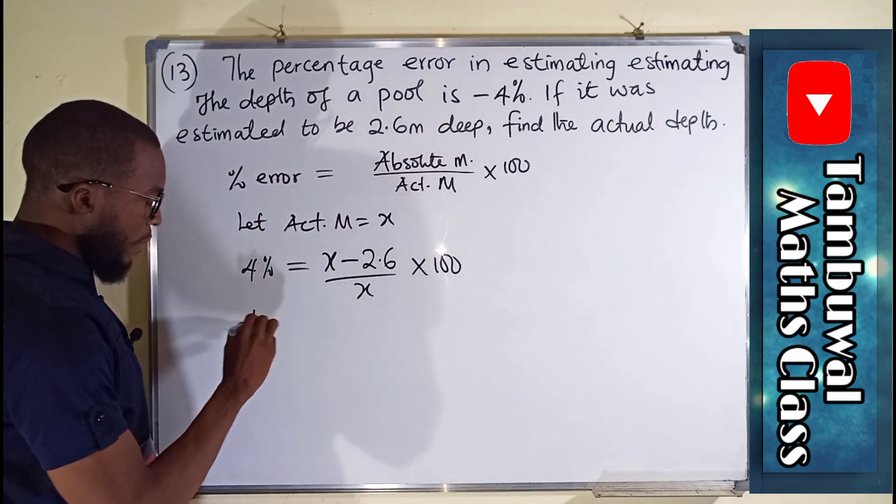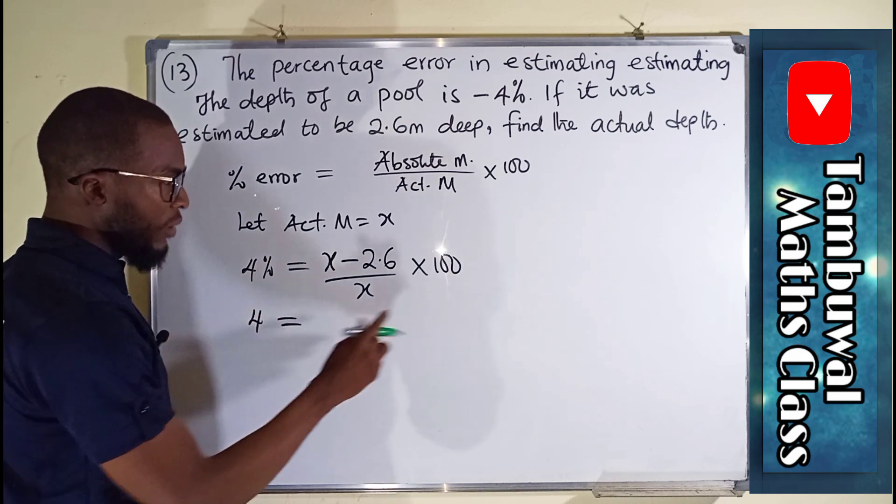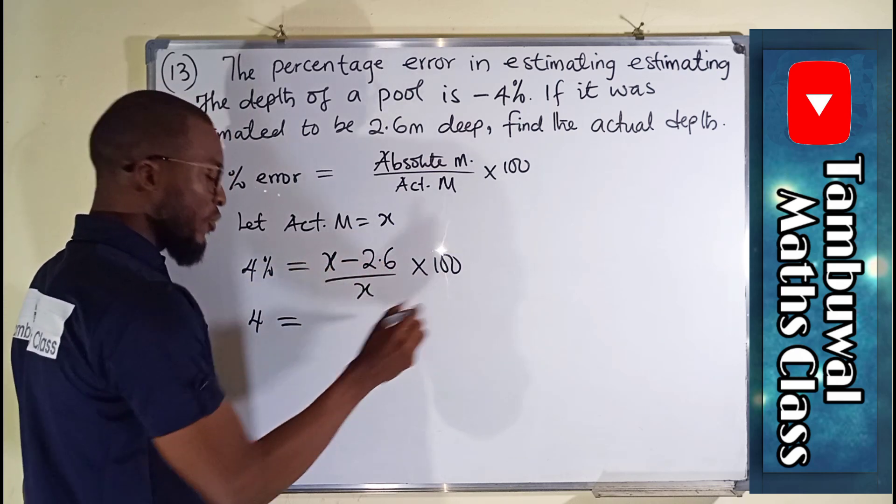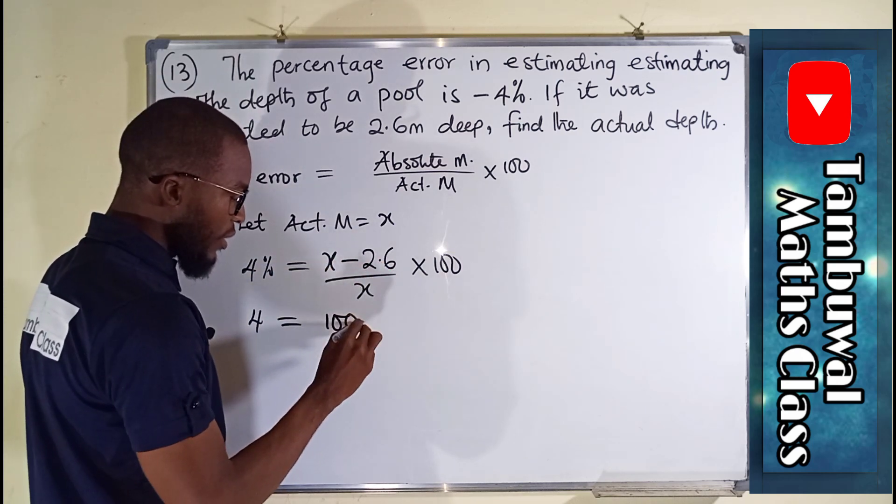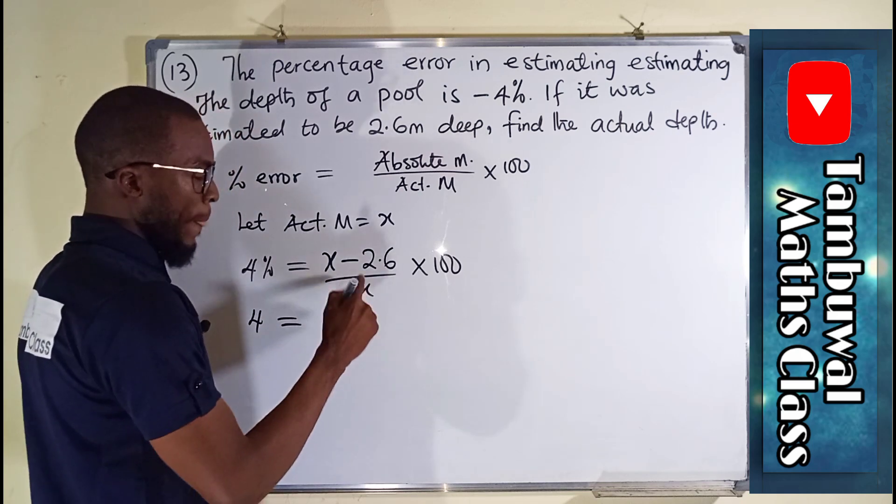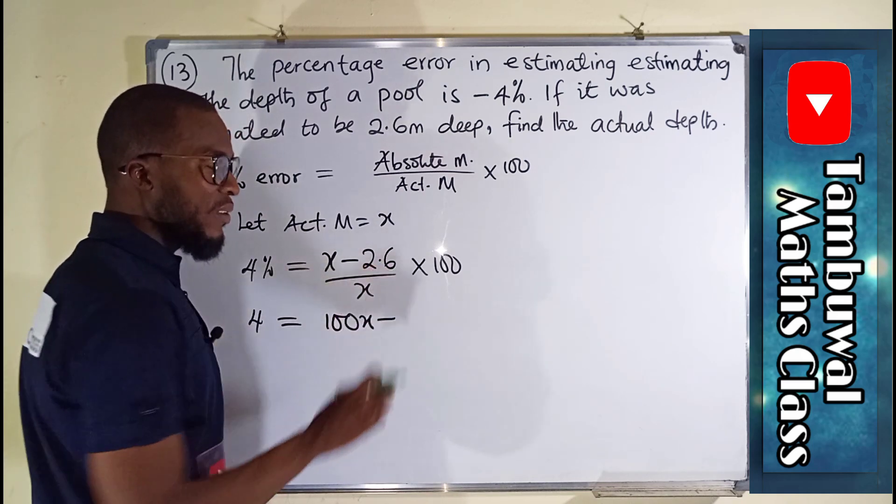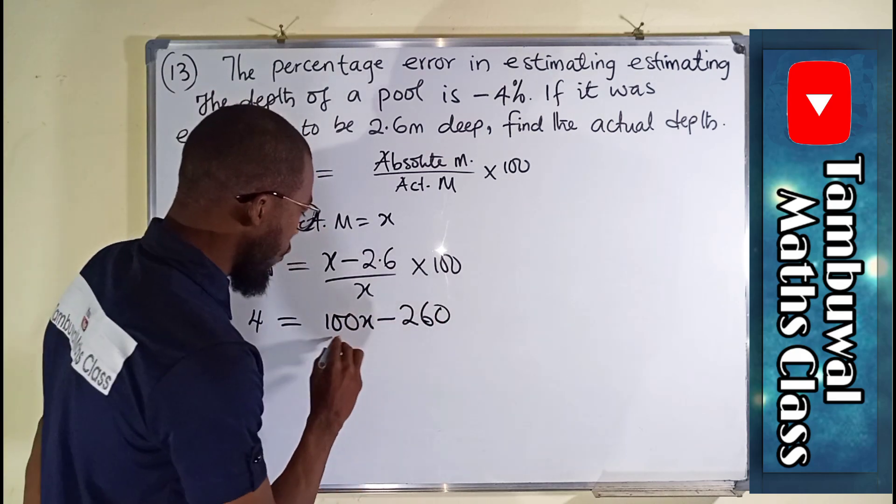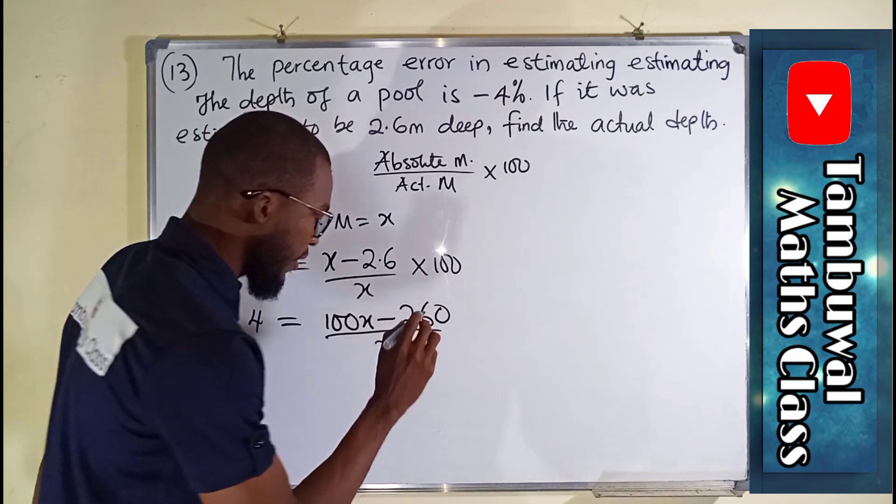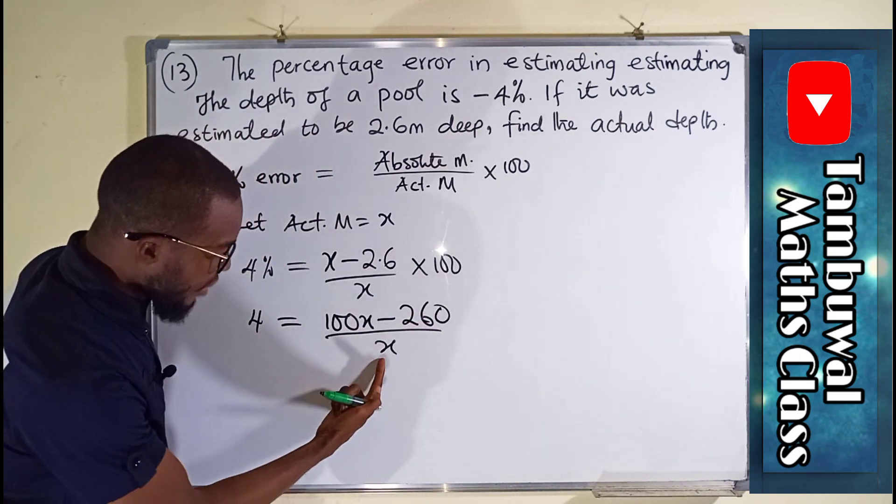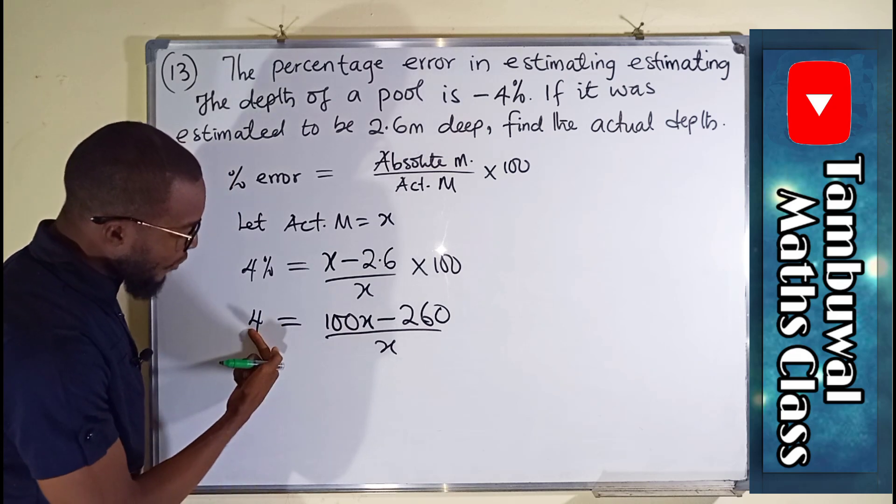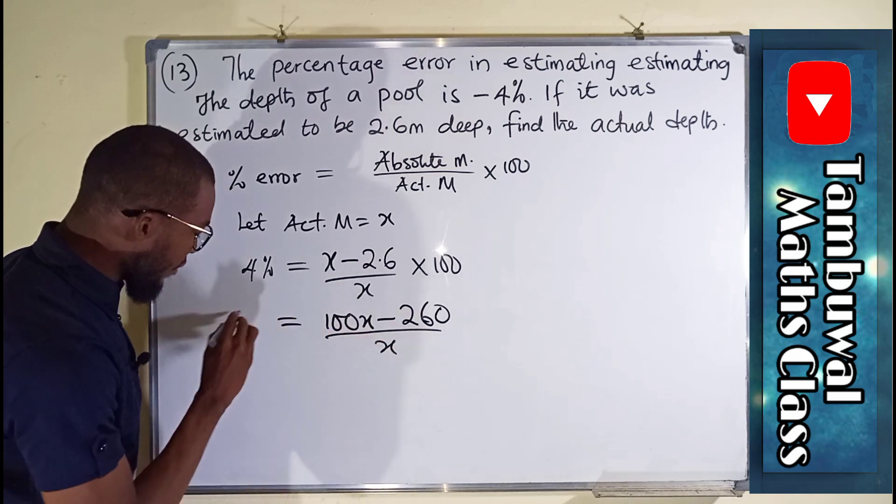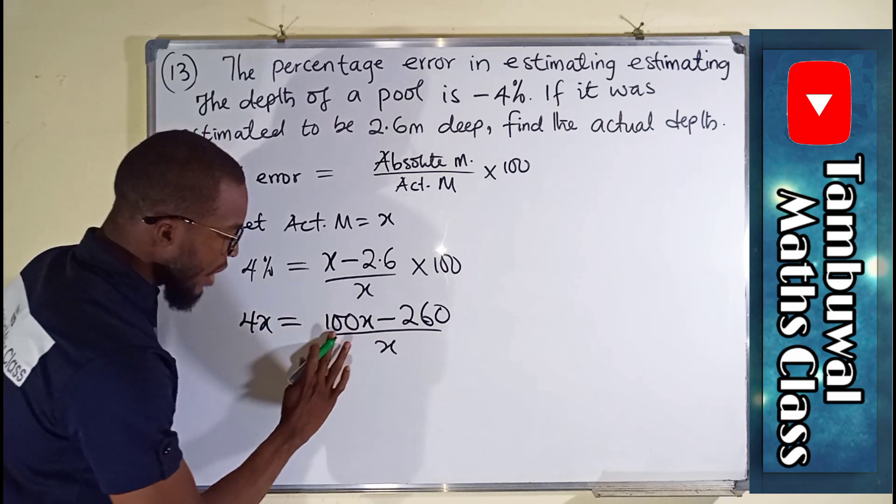4%, or let me just call it 4. We can use this 100 and multiply each of these terms. x times 100 is 100x minus 2.6 times 100 is 260 over x. We can cross multiply now. We can say this x multiplied by 4. We can even do it directly here so that we have 4x. We can say 4 times x is 4x so that we have nothing here.